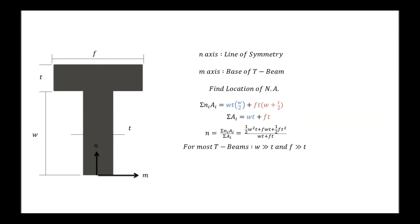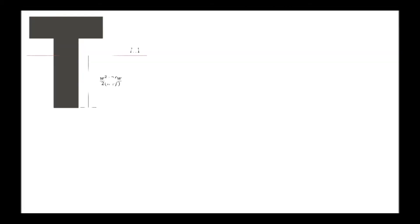For most T-beams, W is much greater than T, and F is also much greater than T. Because of that, we neglect the T squared term. With that simplification, the N distance can be expressed as W squared plus 2FW over 2W plus F. Now that we've found the center of area, we can place our neutral axis there and create a new set of axes XYZ at the centroid.